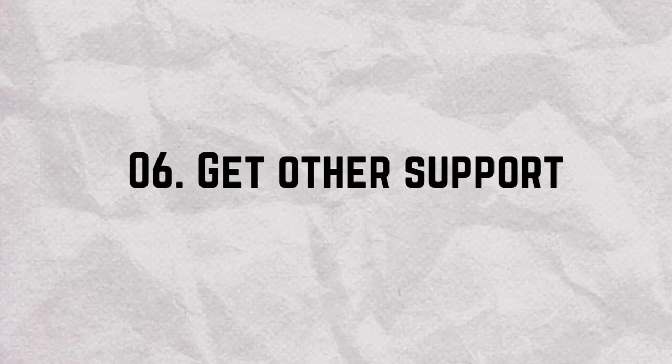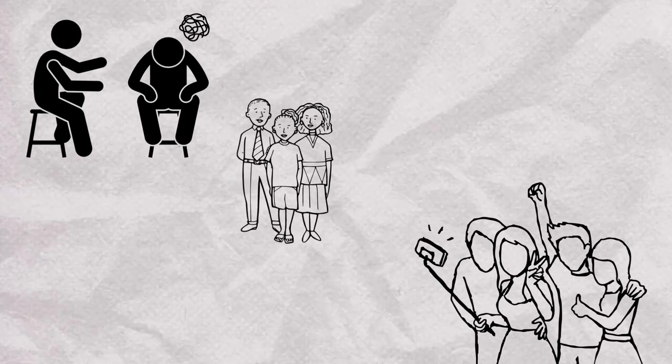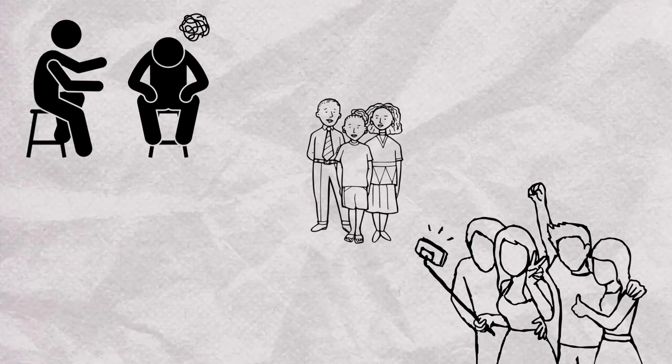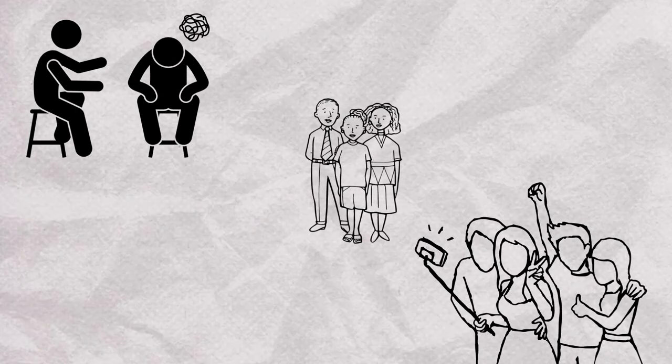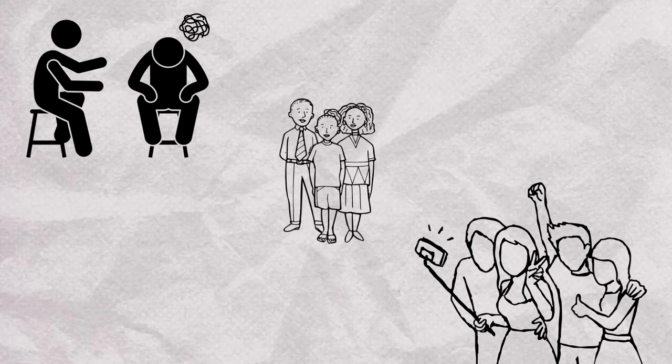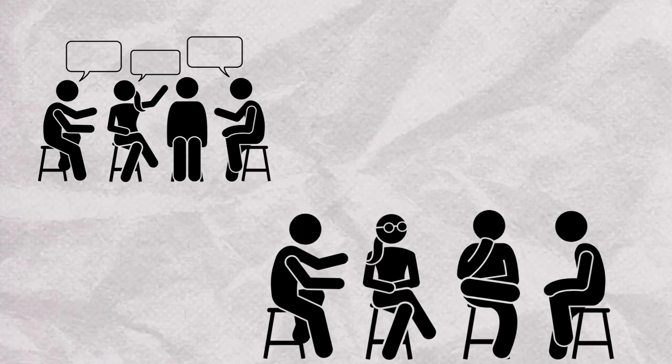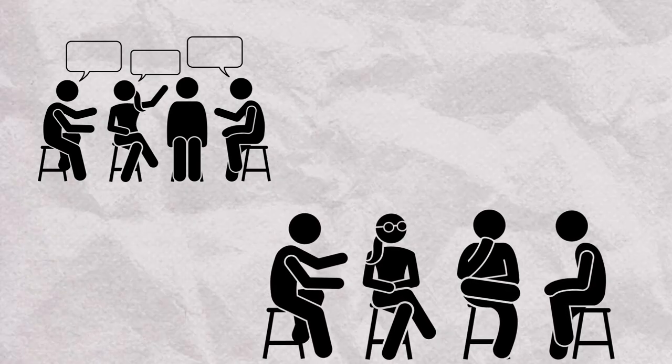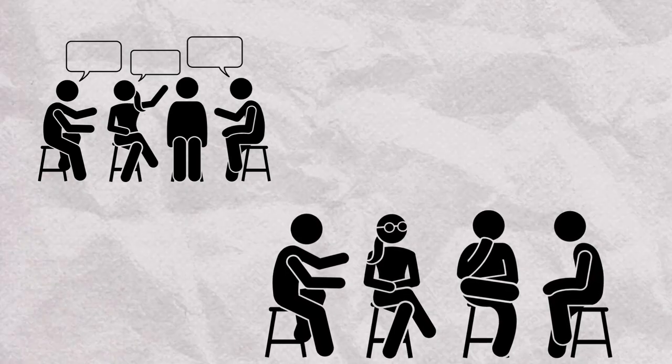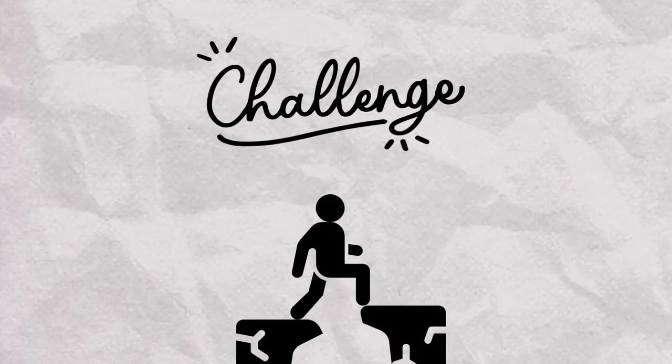Number six, get other support. Seek support from therapists, friends, and other family members. Discussing your experiences with trusted individuals can be cathartic and help reduce the emotional burden. Support groups such as Al-Anon or Alateen for families affected by addiction can provide valuable insight and camaraderie.